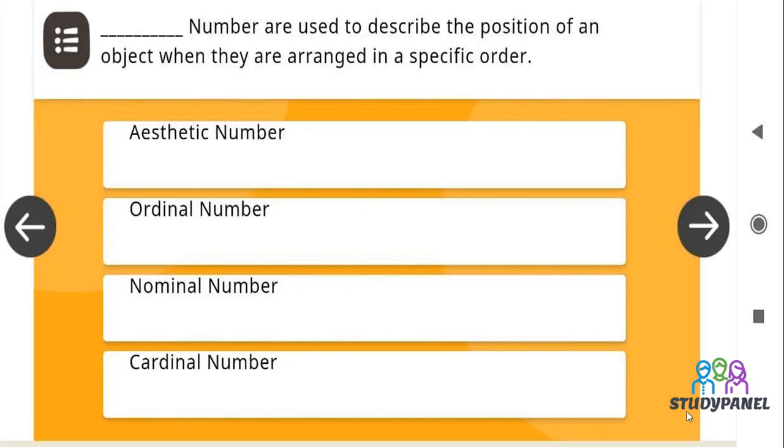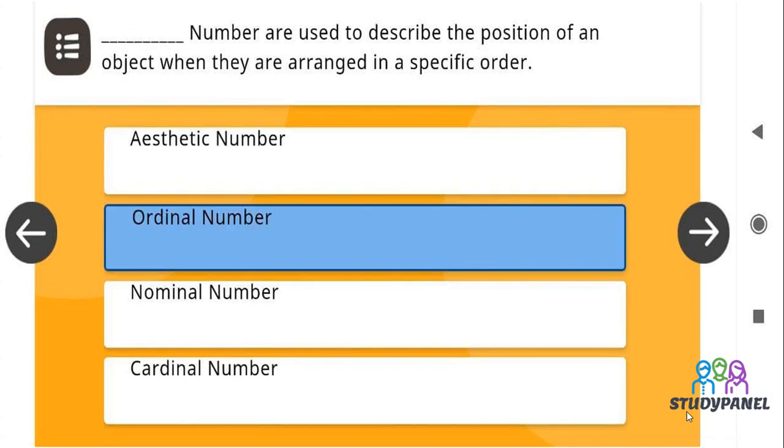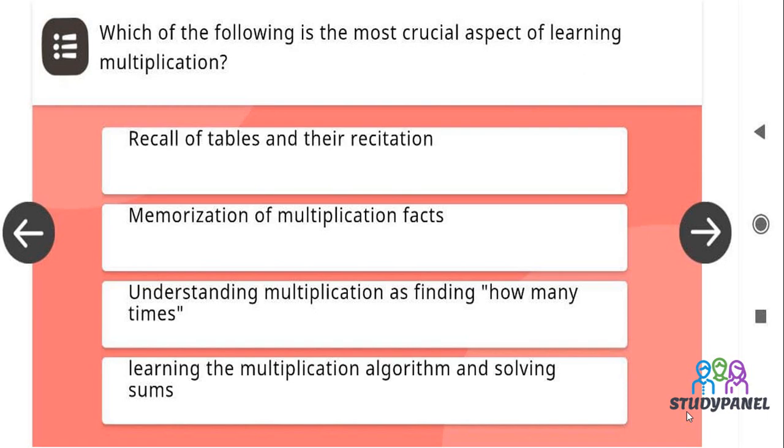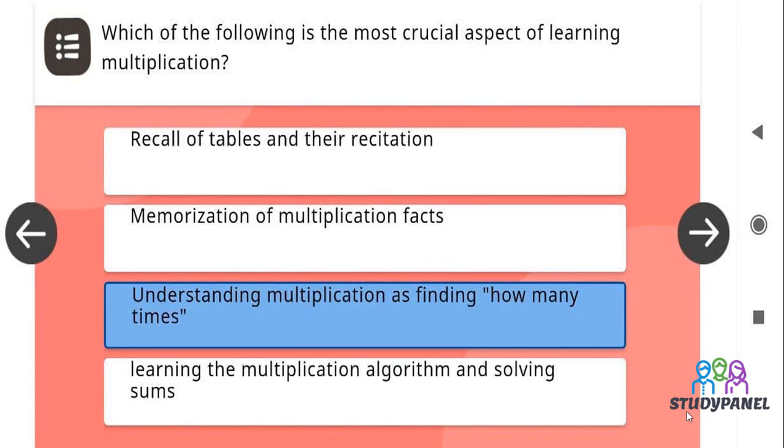Blank numbers are used to describe the position of an object when they are arranged in a specific order. Correct answer is ordinal numbers. Which of the following is the most crucial aspect of learning multiplication? Understanding multiplication as finding how many times.